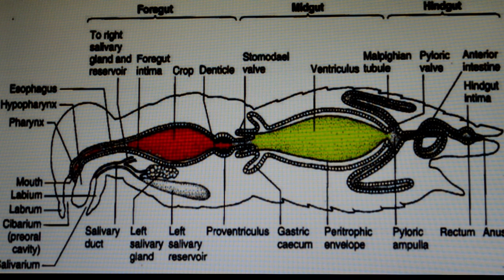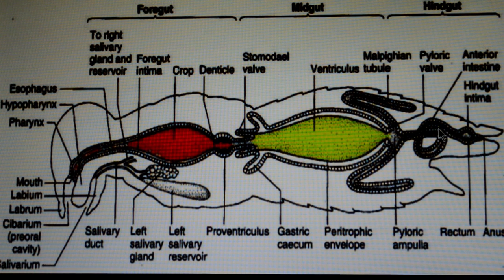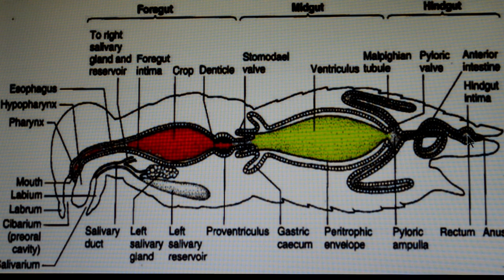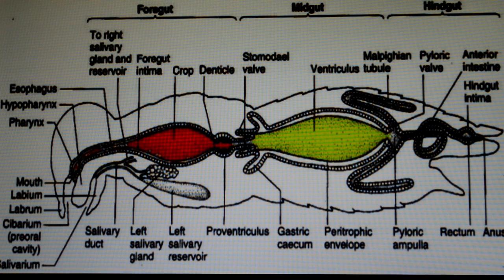The colon is present between the ileum and rectum, and is a tubular structure. The rectum is the posterior part of the hindgut, which helps in reabsorption of water, ions, and other minerals from the urine.